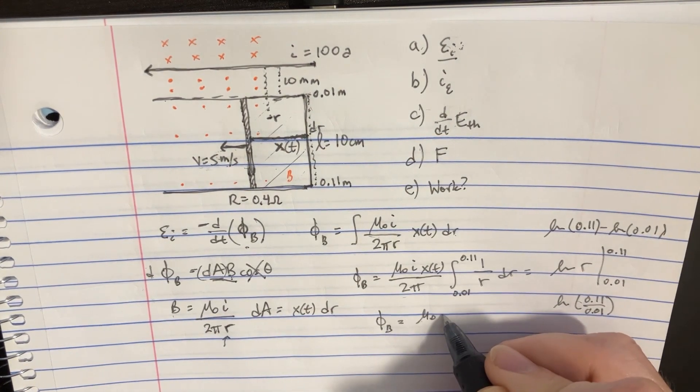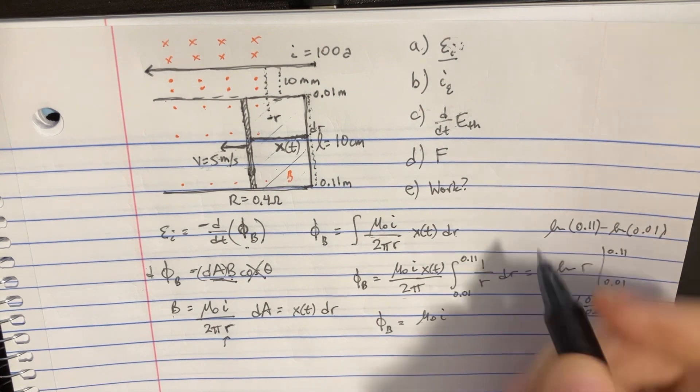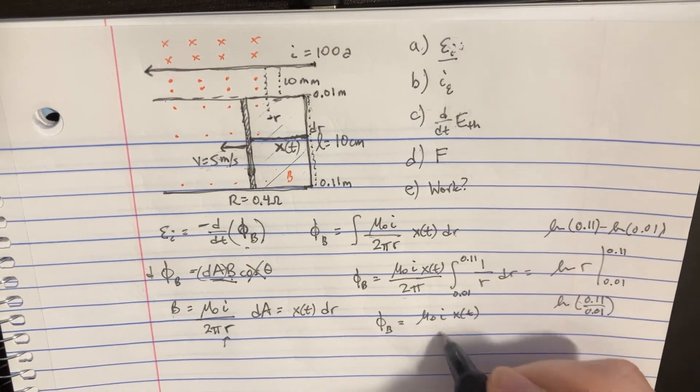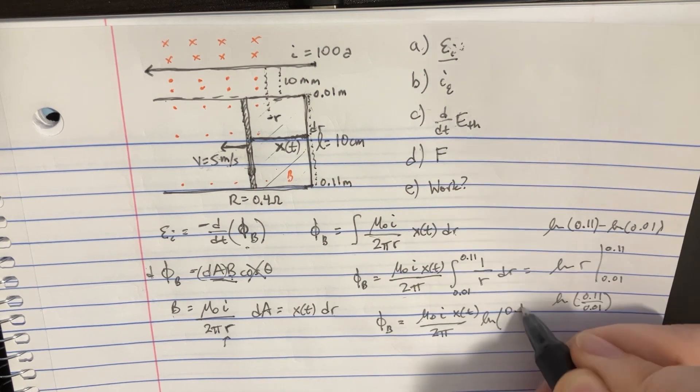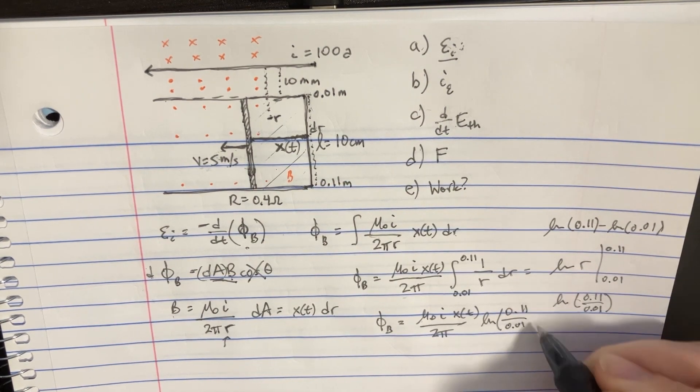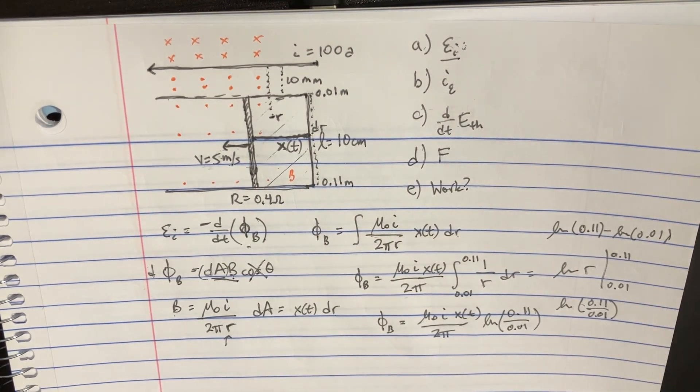So the flux is equal to mu naught i, x of t, over the 2 pi, and here's the ln of 0.11 over 0.01, all that good stuff. We're not done yet, though. We haven't even gotten started with the first one.